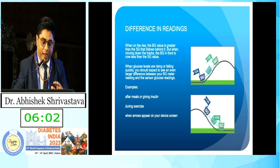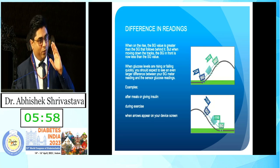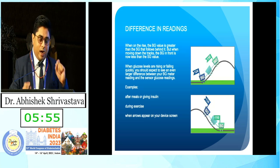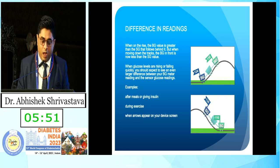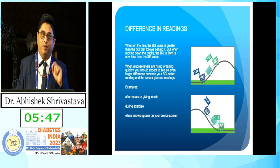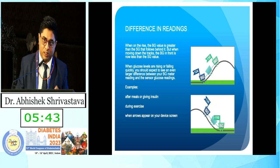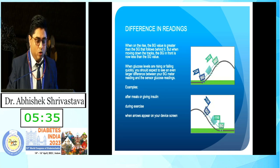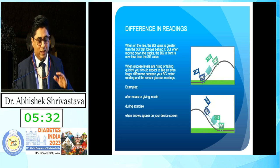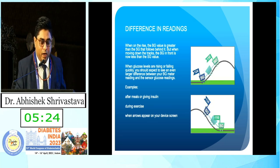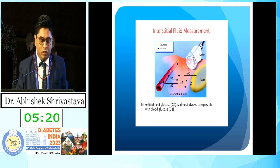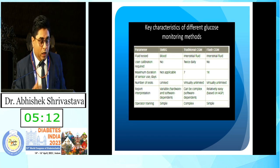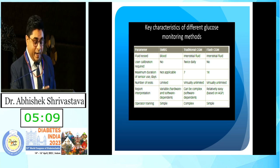CGM and continuous glucose monitoring systems are very good, but there are certain lag times of around 10 to 15 minutes. Whenever a patient is experiencing symptoms of hyperglycemia, or more importantly symptoms of hypoglycemia, those patients should actually measure blood glucose through a glucometer because of these lag times. The values showing on a CGMS right now actually reflect values from 10 or 15 minutes back. But among all the controversies, we can still say that interstitial fluid glucose is almost always comparable with blood glucose levels.